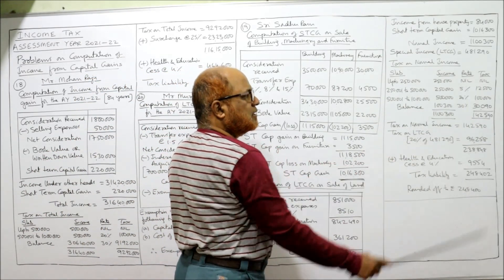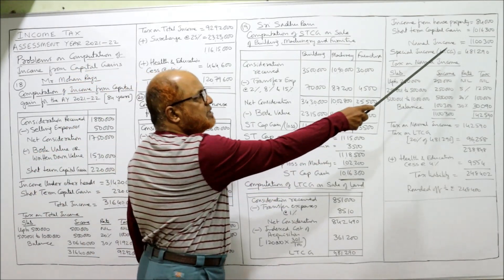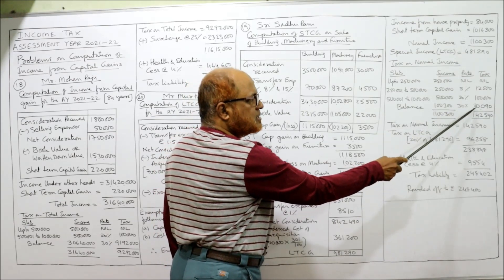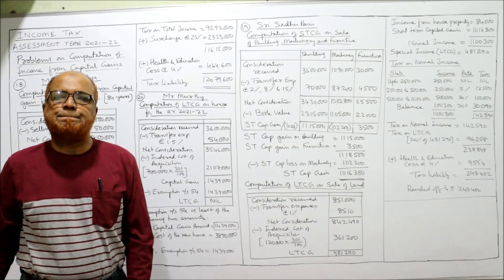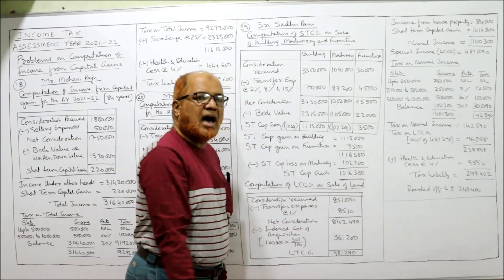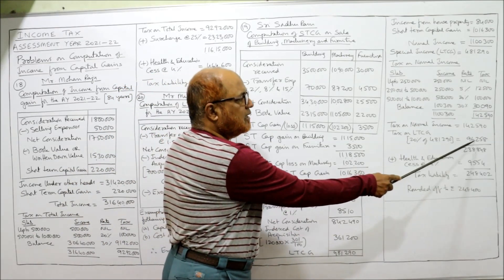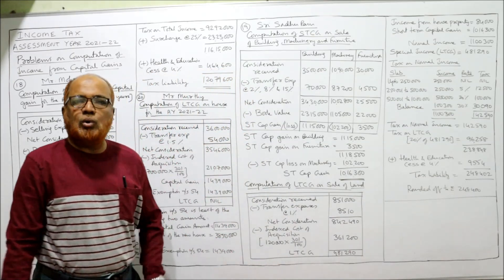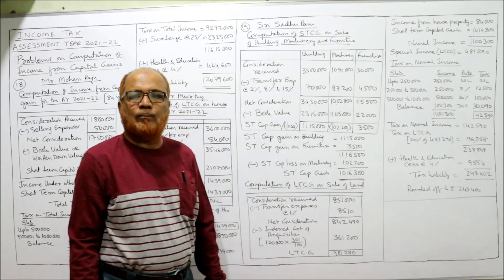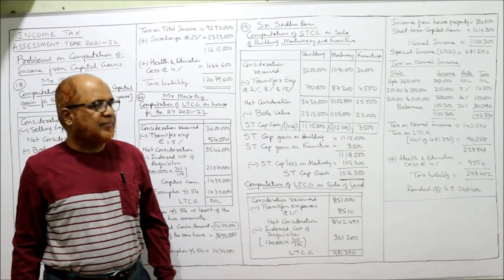From 2 lakh 50 thousand 1 to 5 lakh: 2 lakh 50 thousand at 5% = 12 thousand 500. Next slab 5 lakh 1 to 10 lakh: 5 lakh at 20% = 1 lakh. Balance over 10 lakh taxed at 30%: total income is 11 lakh 300; minus 10 lakh = 1 lakh 300 at 30% = 39 thousand 90. Total tax on normal income: 1 lakh 42 thousand 590. Tax on special income — LTCG at 20%: 20% of 4 lakh 81 thousand 290 = 96 thousand 258. Combined total: 2 lakh 38 thousand 848. Health and education cess at 4% = 9 thousand 554. Total: 2 lakh 48 thousand 402, rounded off to 2 lakh 48 thousand 400.